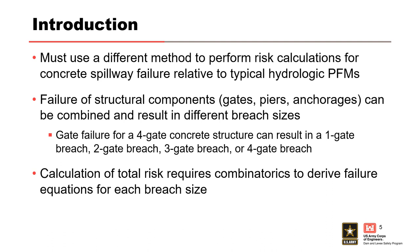For example, a gate failure for a four-gate concrete spillway could result in a one-gate breach, a two-gate breach, a three-gate breach, or a four-gate breach, depending on the failure combination. Therefore, the method for calculating the annual probability of failure and average annual life loss for a concrete spillway structure includes the use of combinatorics to develop equations for a discrete breach size that include the probability of failure or non-failure of multiple concrete spillway components.